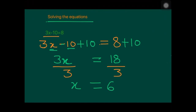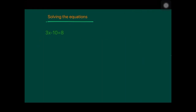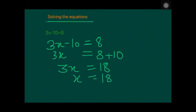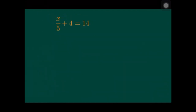There is also a direct method — the transposition method. In 3x minus 10 equals 8, leave x on the left and take minus 10 to the right side, where it becomes plus 10. So 3x equals 18. Since 3 is multiplied with x, divide both sides by 3, giving x equals 6. In the beginning, I recommend using the first step-by-step method.